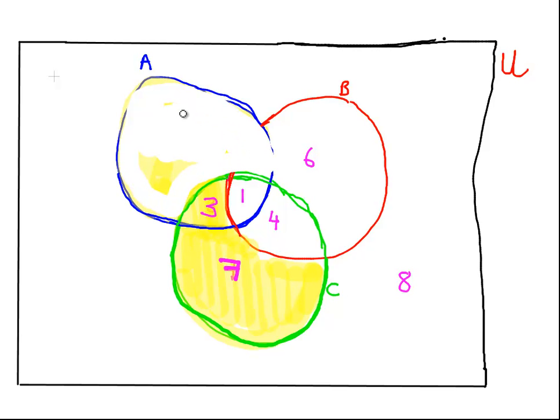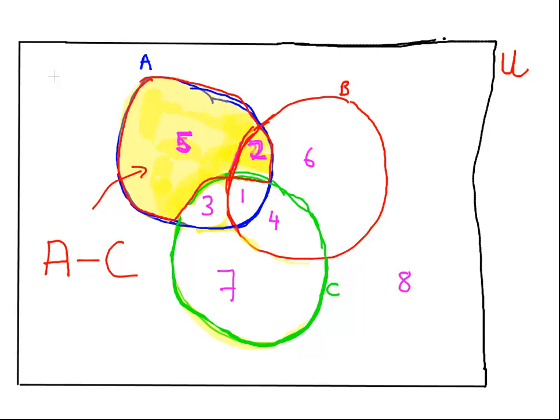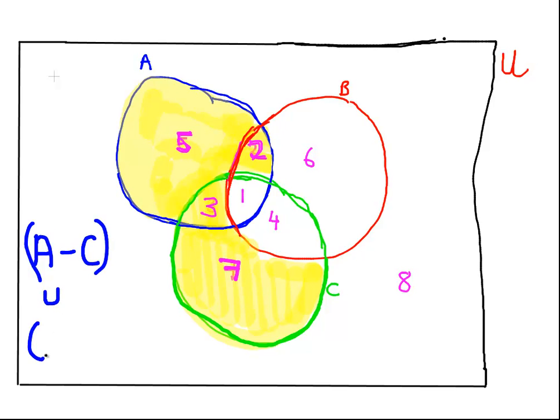What we're going to do now is color out this region here, just so we're left with regions 3 and 7. Regions 3 and 7, similarly, correspond to, this is C down here, the set C. This shaded region here corresponds to C minus B. That one there is A minus C, this one here is C minus B. Together, what we have there is A minus C union C minus B.